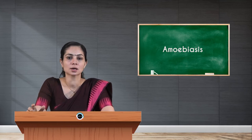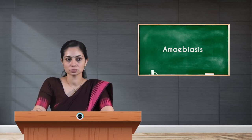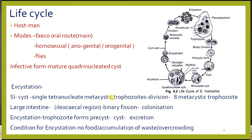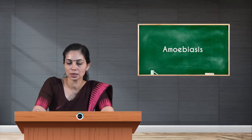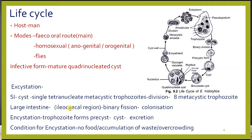After ingestion of mature quadrinucleate cysts, excystation occurs in the small intestine. The cysts turn into a single tetranucleate metacystic trophozoite. After further division, eight metacystic trophozoites are formed. In the large intestine, specifically the ileocecal region, they undergo binary fission leading to colonization.